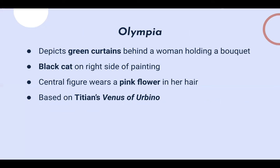Next, let's talk about Olympia. Olympia was first exhibited at the 1865 Paris Salon. It shows a nude woman lying on a bed being brought flowers by a fully clothed servant. The figure of Olympia was modeled by Victorine Meurent, who also modeled for Luncheon on the Grass. Other important features include green curtains behind the woman holding the bouquet, a black cat on the very right side, and the central figure wearing a pink flower in her hair and staring toward the viewer — which was considered scandalous at the time.